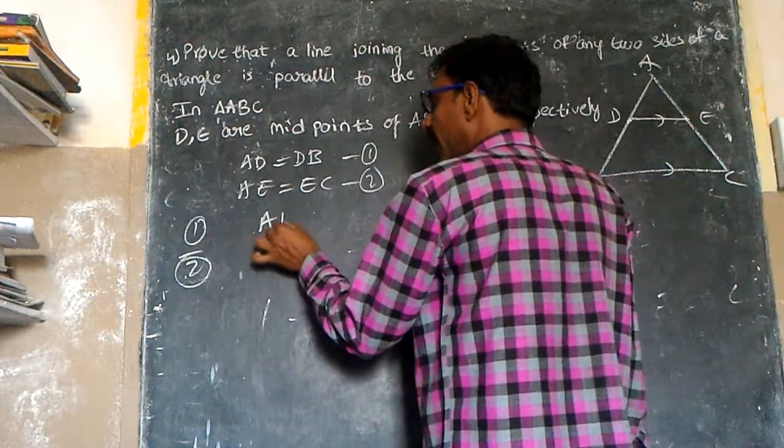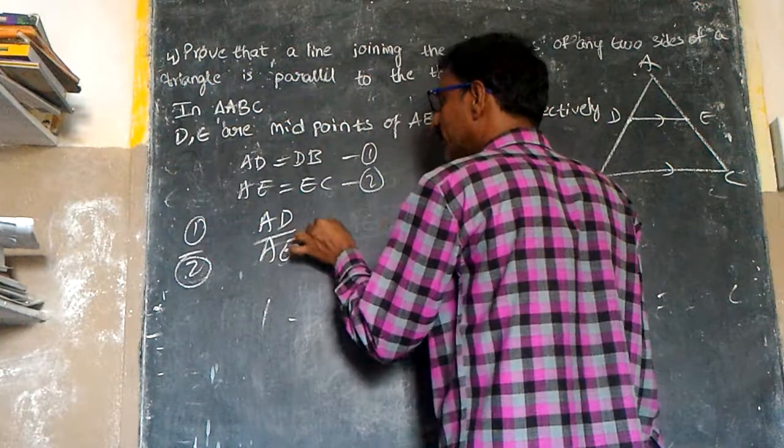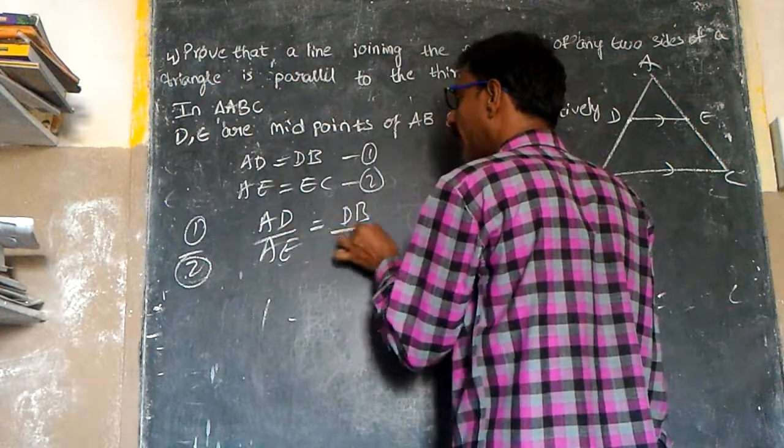So, AD by DB is equal to AE by EC. Therefore, AD by AE is equal to DB by EC.